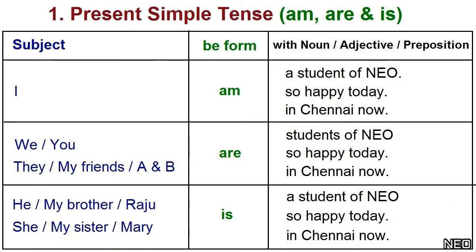In present simple tense, we use am, are, and is. Examples: I am a student. We are students. He is a student.